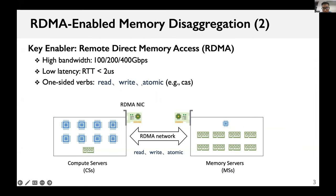RDMA Network is a key enabler of memory disaggregation. It provides high bandwidth and low latency network access. RDMA supports one-sided verbs, which include read, write, and atomic. Those one-sided verbs can operate directly on remote memory without involving the CPU or the receiver.